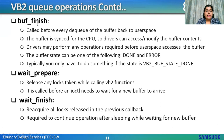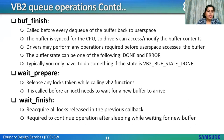buf_finish: called before every dequeue of the buffer back to user space; the buffer is synced for the CPU, so drivers can access or modify buffer contents and perform any operation required before user space access. Optional callback. Buffer state can be VB2_BUF_STATE_DONE or VB2_BUF_STATE_ERROR; typically we act only when state is VB2_BUF_STATE_DONE since buffer contents are ignored in other cases. wait_prepare: releases any locks taken while calling VB2 functions; called before an IOCTL needs to wait for a new buffer, required to avoid deadlock in blocking access type calls. wait_finish: reacquires all locks released in the previous callback, required to continue operation after sleeping while waiting for a new buffer.